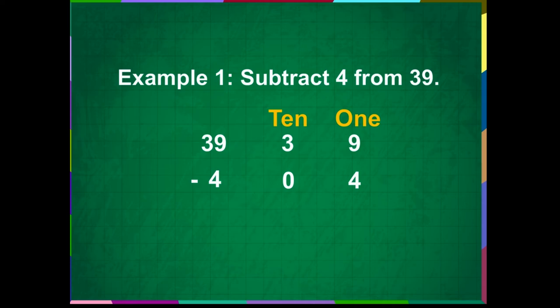Let us first subtract from the ones place. Draw 9 small vertical lines beside it. Now, cross 4 lines. Count the remaining lines. It is 5. Write 5 in the ones place.